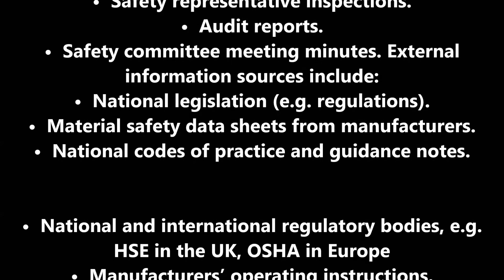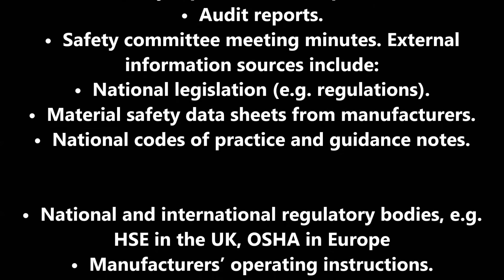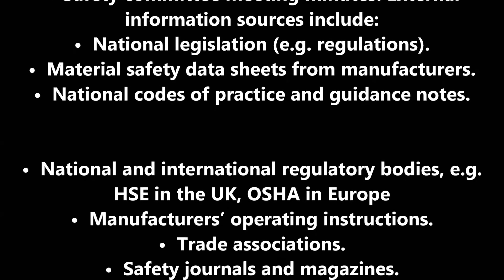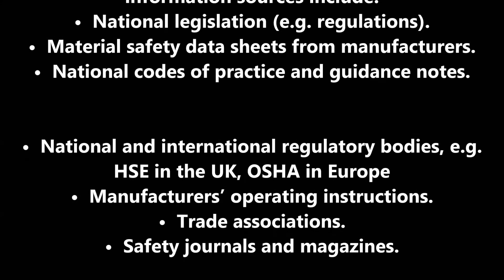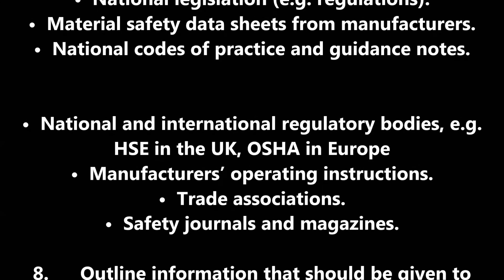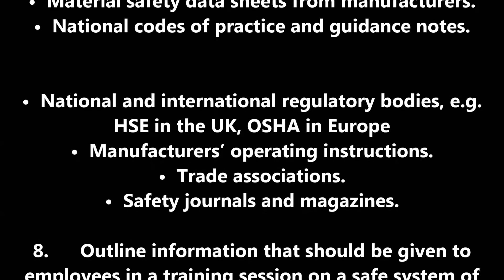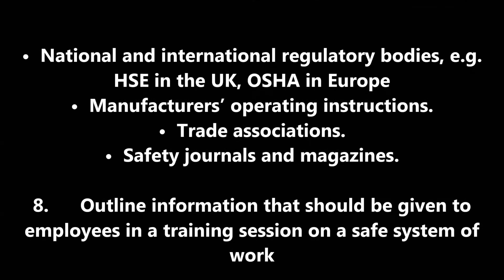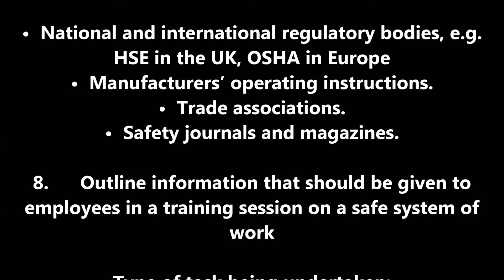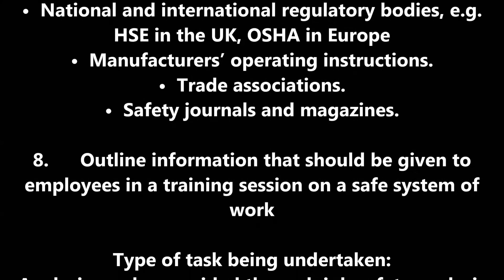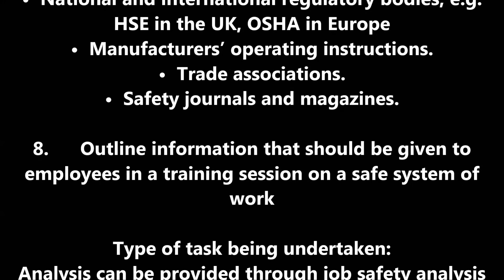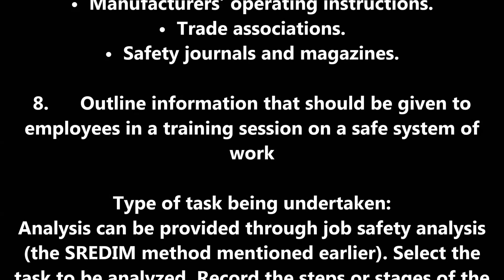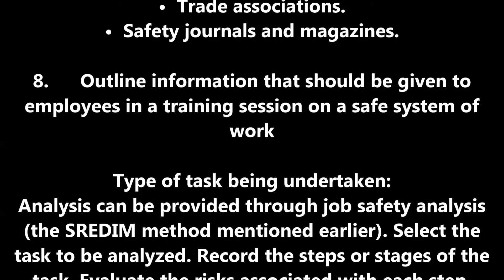Question 7: Outline sources of information that could be consulted when developing a safe system of work. Internal information sources include: accident records, medical records, absence records, risk assessments, maintenance reports, safety representative inspections, audit reports, and safety committee meeting minutes.